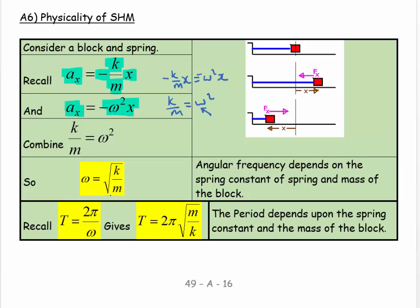Now if I want to talk about the period, the period is how long it takes to do one complete cycle. The period equals the number of radians in one complete cycle, which is 2π, over the angular velocity.